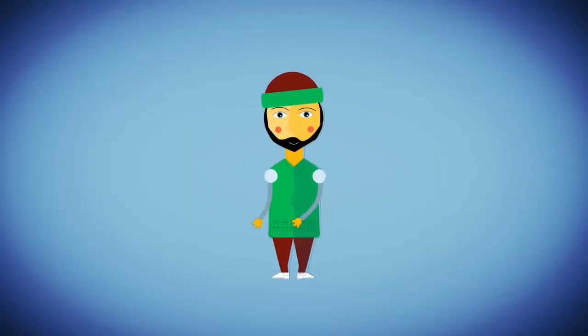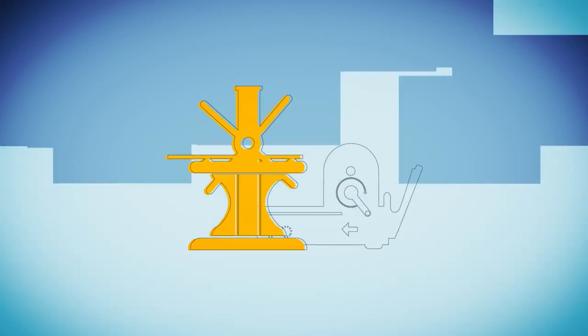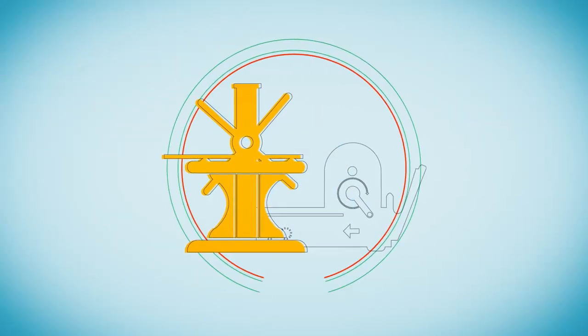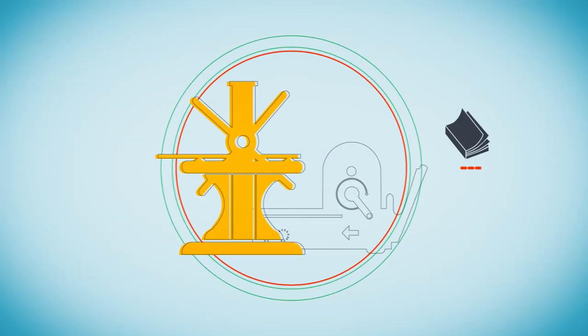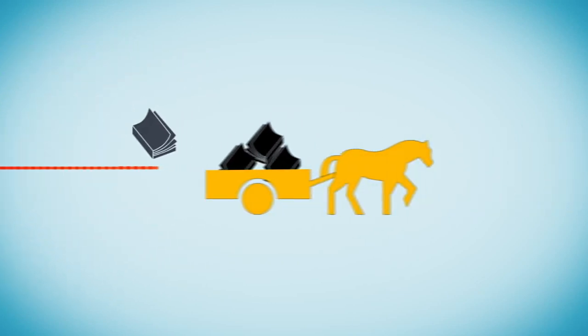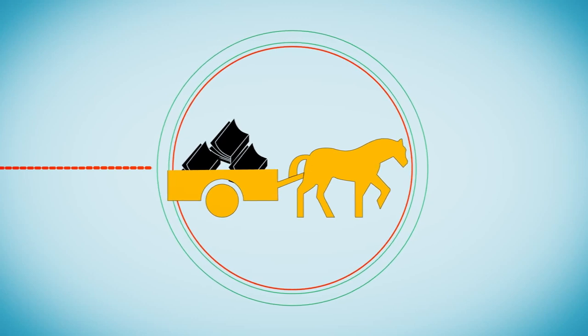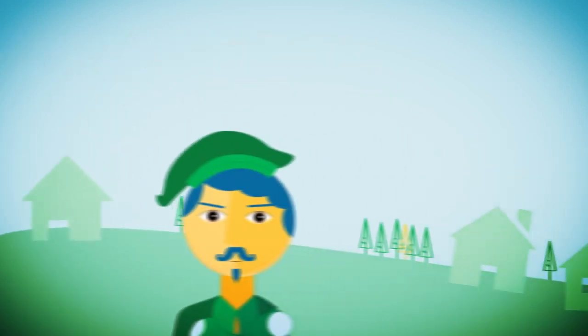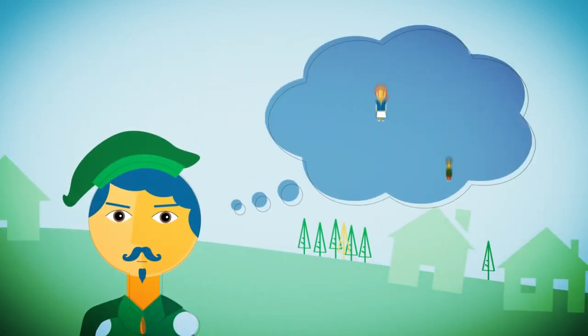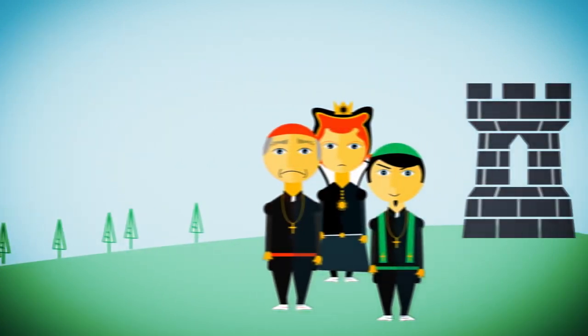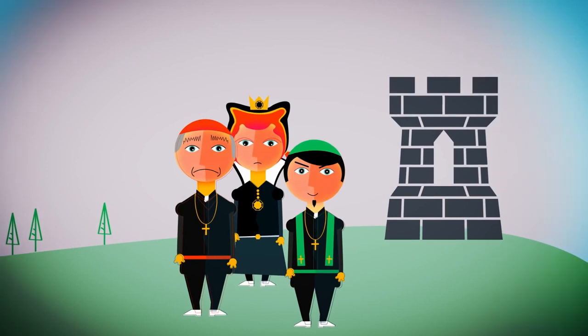Along came the first ever copying machine: the printing press. It forever revolutionized the way people spread information. Here at last was a cheap and quick way to make copies of books, and a very accurate one too. The writers, of course, were thrilled to have more published books and a lot more readers. Yet both the state and the church were absolutely furious.